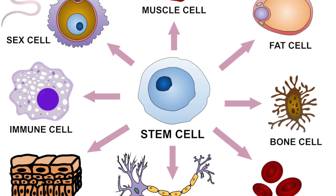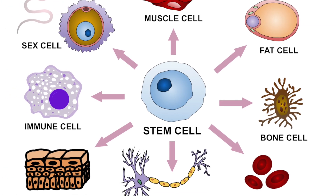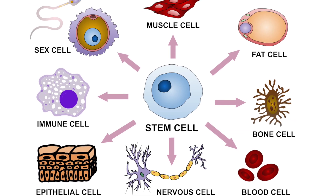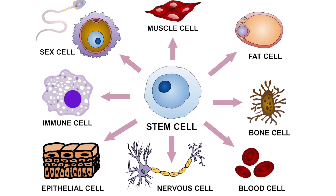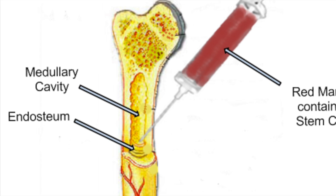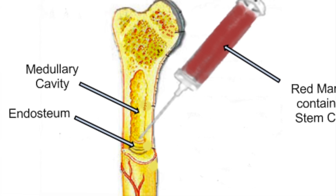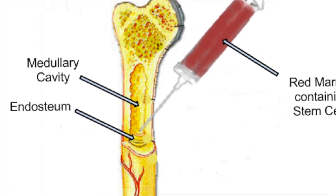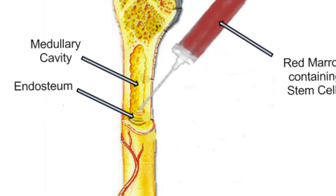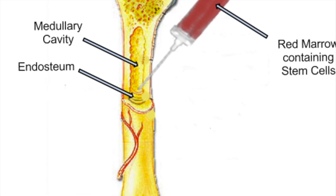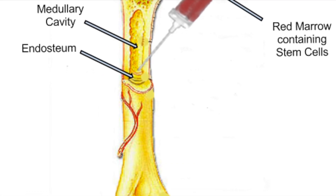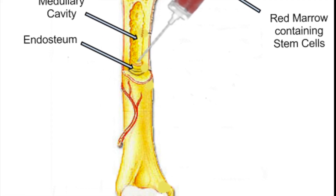Stem cells are found in the early human embryos; however adults also have stem cells. Stem cells in adults can only be found in certain places like bone marrow. These are not as versatile as embryonic stem cells, as they can only turn into certain cells, not any type of cell.